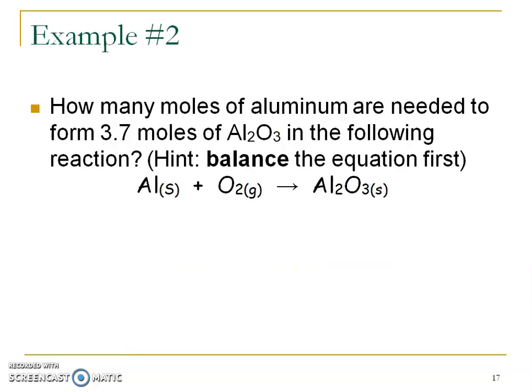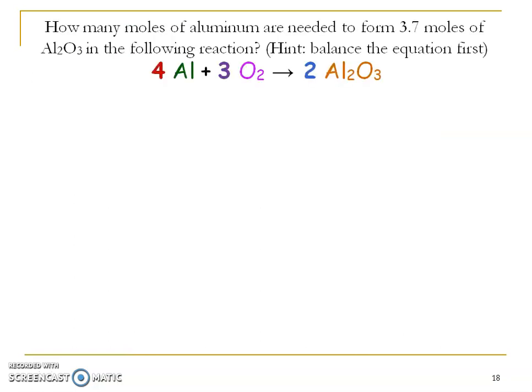So example two we'll do this one again together. So pause read and then balance the equation. So hopefully you paused and you came up with a balanced chemical equation of this. Now remember instead of putting the question mark and the star we're going to put the information underneath our balanced equation. So my question mark in this case is going to go under aluminum and what I have or my starting point is going to go under the aluminum oxide.